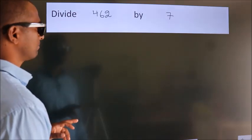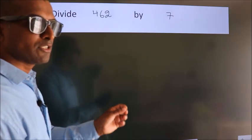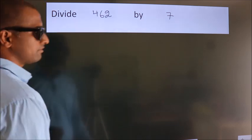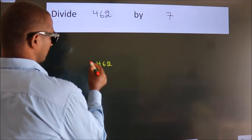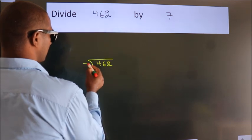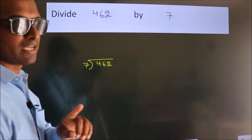Divide 462 by 7. To do this division, we should frame it in this way. 462 here, 7 here. This is your step 1.